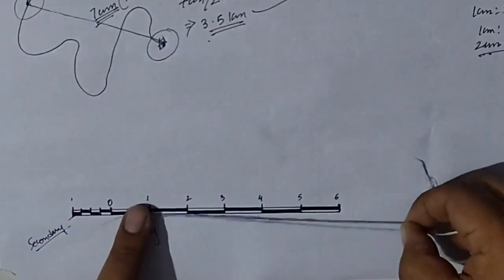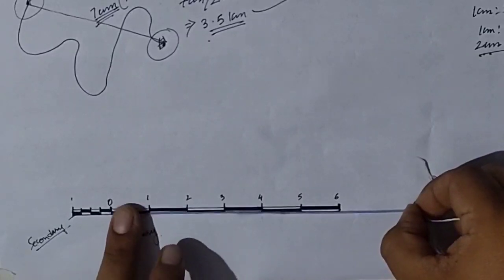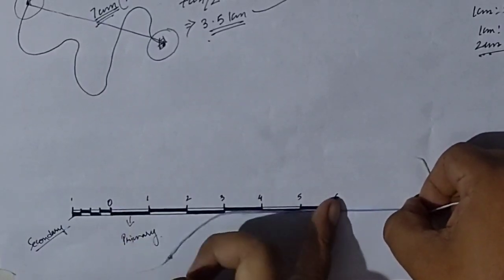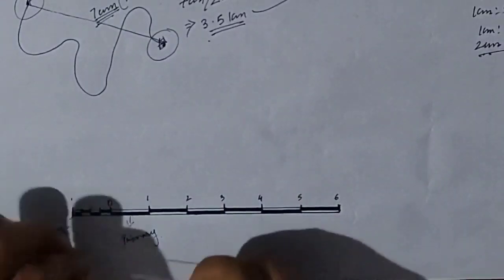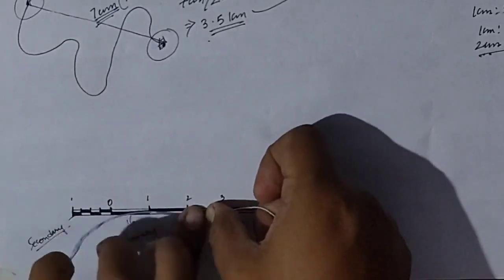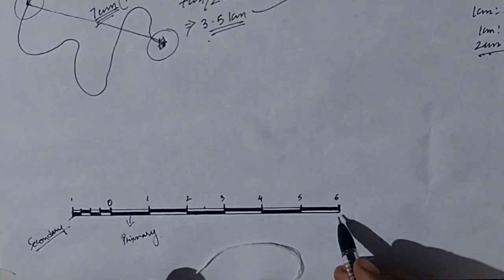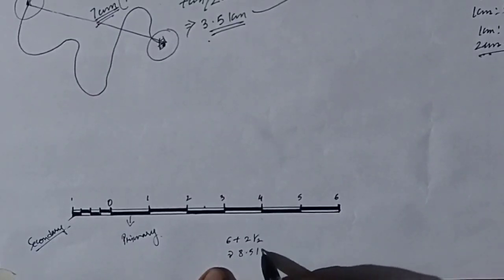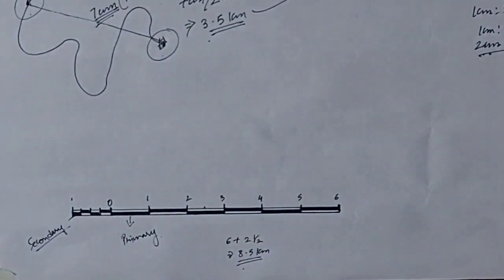Once the thread is placed along the route, measure it against the linear scale starting from zero. Here I measured six and a half first, then placed it again from zero and got about two and a half more. So six plus two and a half gives 8.5 kilometers as the indirect distance between place A and place B.